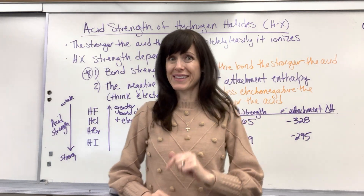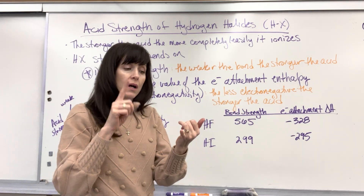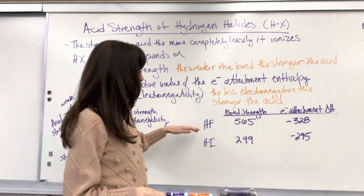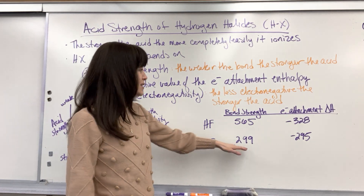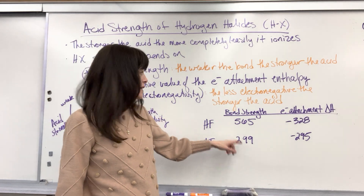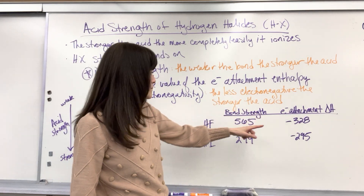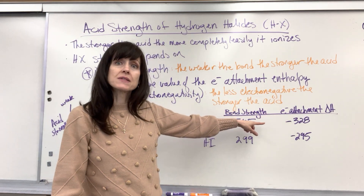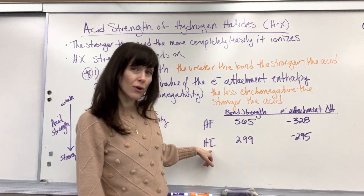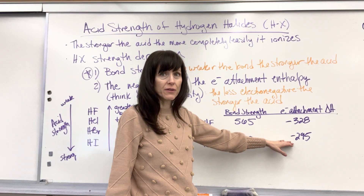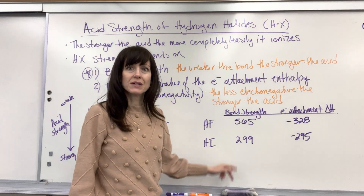I have a numeric example to compare bond strength as well as electron attachment enthalpy for hydrofluoric acid and hydroiodic acid. Look at HF — its bond strength is 565, while hydroiodic acid is only 299. That's a significant difference. Now if we look at the electron attachment enthalpy, hydrofluoric acid is more negative — a greater ability to attract those electrons — whereas hydroiodic acid is only negative 295. Numerically, you can see the biggest difference is that bond strength.